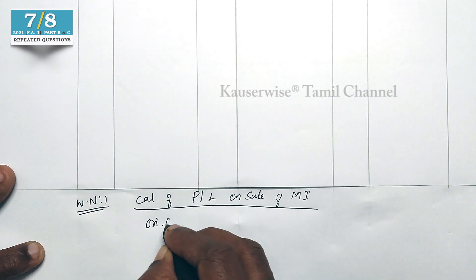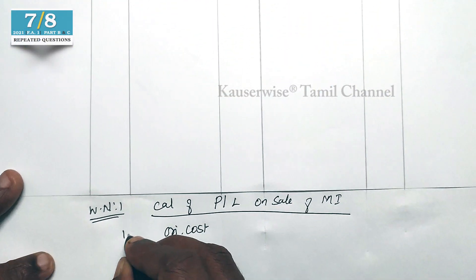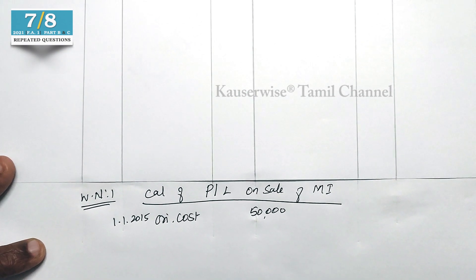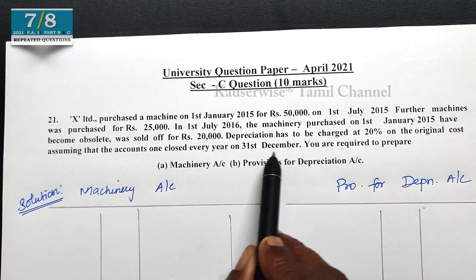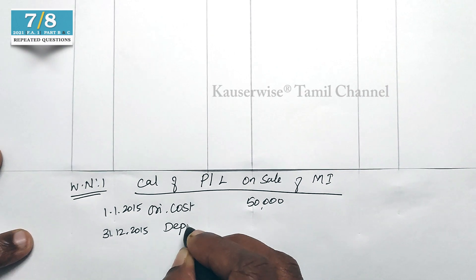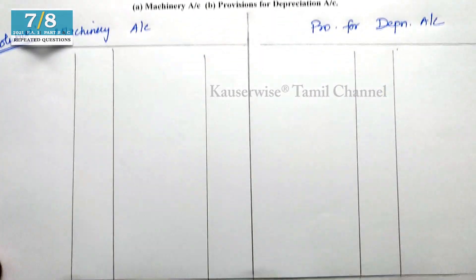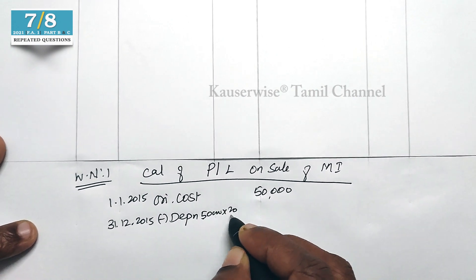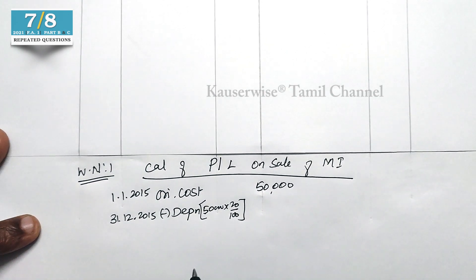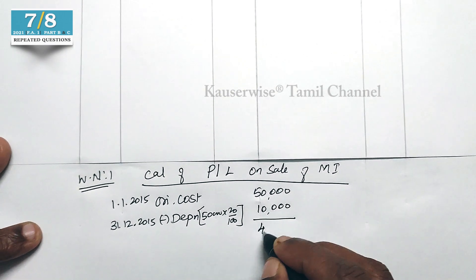Machine 1 was purchased on 1st January 2015 for 50,000. Every year depreciation is calculated at the end of the year, 31st December. For the first year ending 31st December 2015, depreciation is 50,000 × 20% = 10,000. So the balance after year one is 40,000.